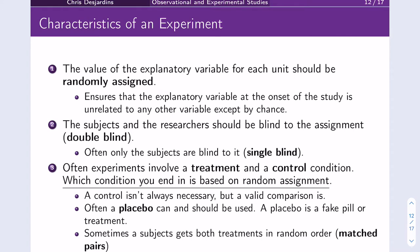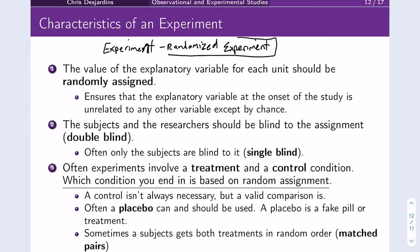Let's contrast this with an experiment. A good experiment is going to be a randomized experiment. The value of the explanatory variable for each unit is going to be randomly assigned — that is inherently the idea behind a randomized experiment. And that way you can conclusively show causal links.